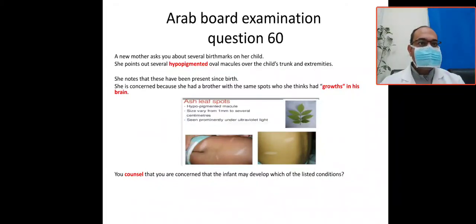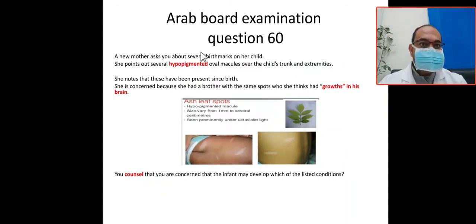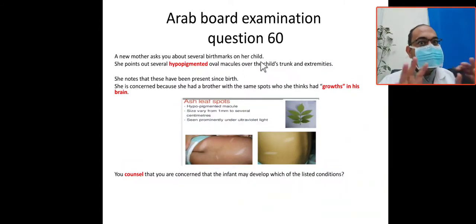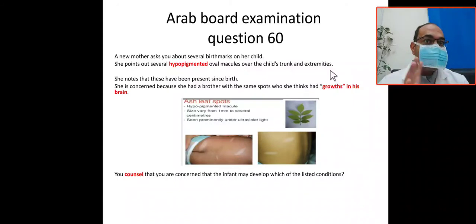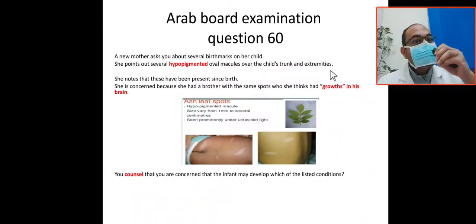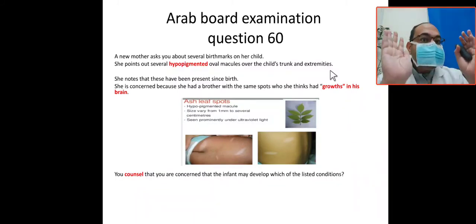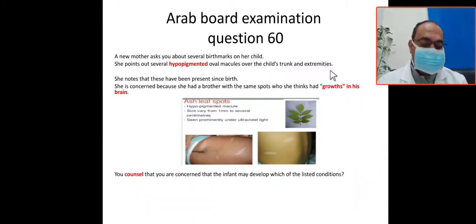This question is common in Arab board, Saudi board, Jordanian board, and Egyptian board, and you can also face it when discharging a patient from the nursery or in your clinic. A new mother asks about several birthmarks on her child. There are some birthmarks and the mother is concerned, pointing out several hypopigmented, oval, well-demarcated macules over the child's trunk and extremities.